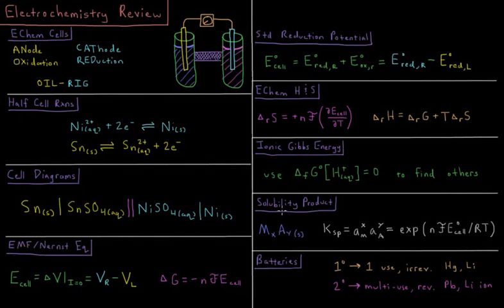The solubility product can also be measured using electrochemical cells. That's the equilibrium constant for a given metal salt dissolving in solution, where the Ksp equals the activity of each of the ions to the power of their stoichiometric coefficient, which is also equal to the exponential of nFE°cell over RT.